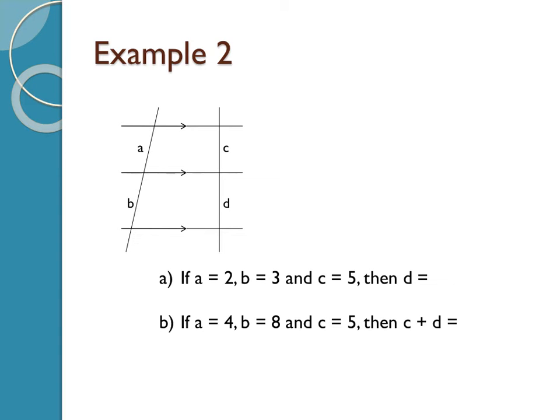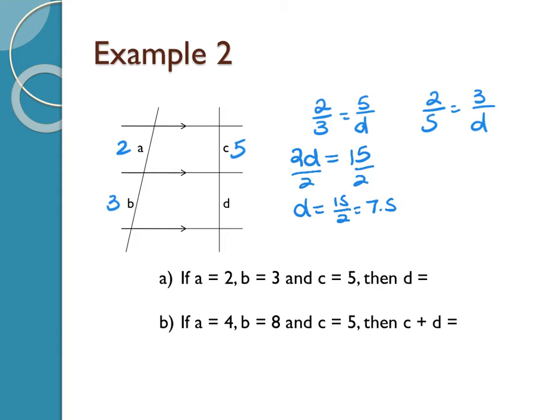All right. Example two says if A is 2 and B is 3 and C is 5, then D is. So A is 2, B is 3, C is 5, D is what I don't know. So I can say 2 over 3 equals 5 over D. Or I could say 2 over 5 equals 3 over D. Doesn't matter. Good. 2D equals 15. Divide by 2. And D equals 15 over 2, or 7.5, or 7 and 1 half.